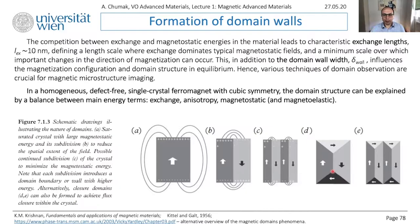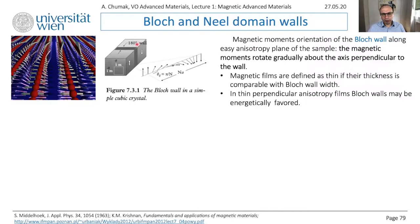So just two more words about the domain wall — just classification. There are two main types of domain walls; there are many more, including hybrids, asymmetric domain walls, and so on, but the classical domain walls are Bloch and Néel. The Bloch wall is easiest to understand if you imagine working not with thin films but with a rectangular bulk sample. Magnetization on one side is pointing up and on the other pointing down — so it's a 180-degree domain wall, because 90-degree walls also exist, but we are discussing this main type.